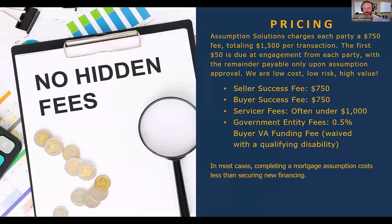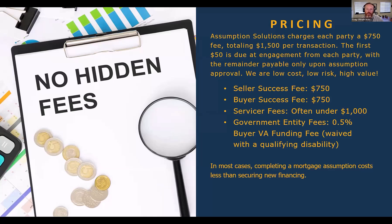Let's talk about pricing. Assumption Solutions charges each party a $750 fee, totaling $1,500 per transaction. The first $50 per side happens at engagement — that's a non-refundable fee — but we do not charge the remaining $700 per side unless the servicer issues approval and clear to close. We like to say we are low cost, low risk, high value. Servicer fees for processing are often under $1,000. On the VA side, a buyer funding fee of a half percent may apply, waived if the buyer has a qualifying VA disability.